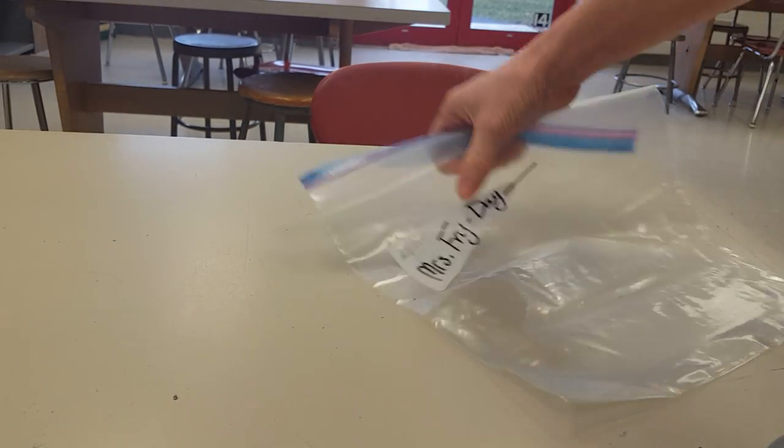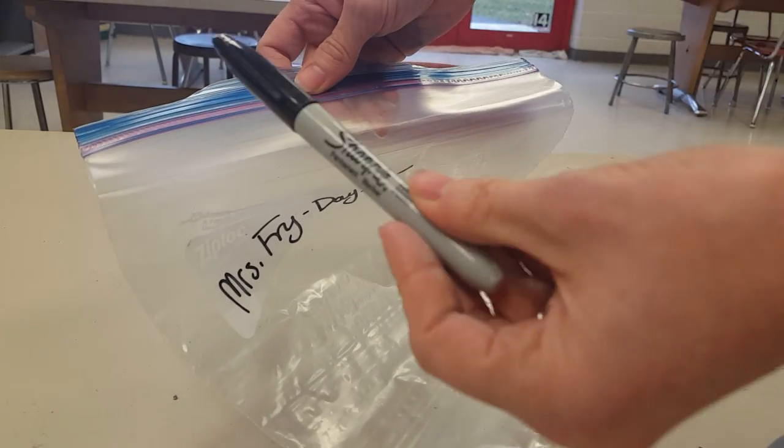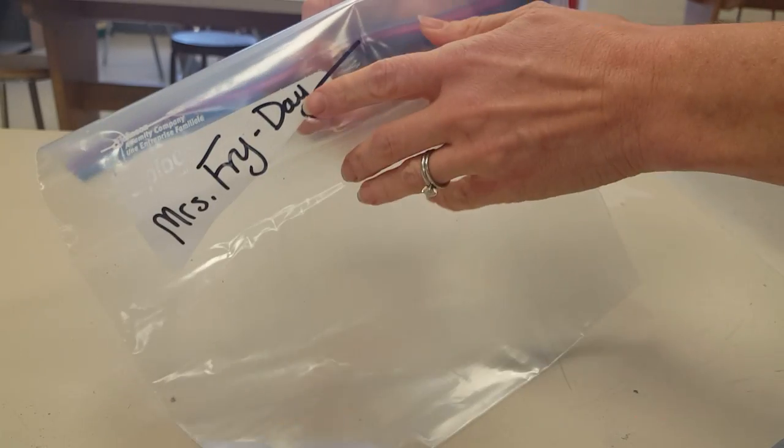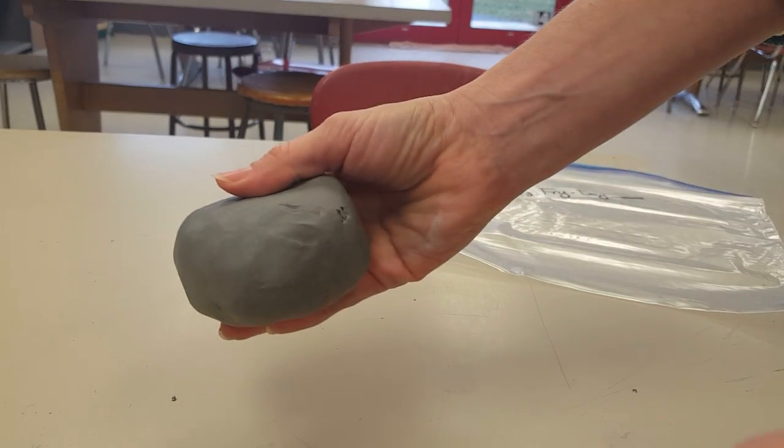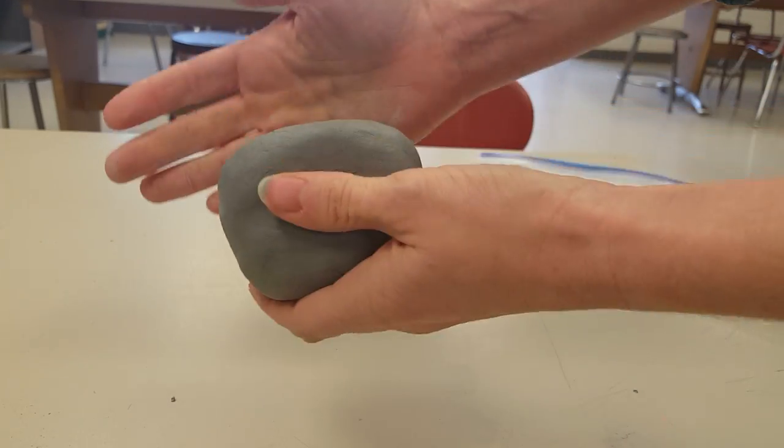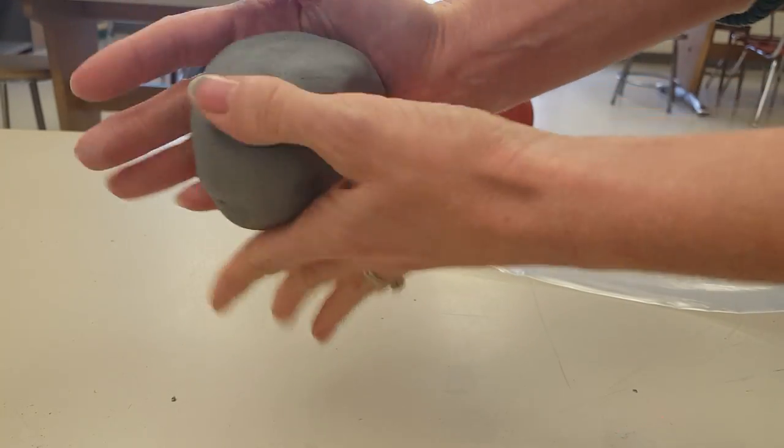To start this project, you will need to get a bag and please use a sharpie to write your name and the day that you come to art on the bag. If you're done with that, you're going to get a piece of clay which will look a lot like a block, and you're going to take it with your hand and form it into a ball.